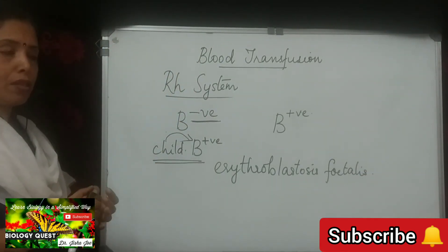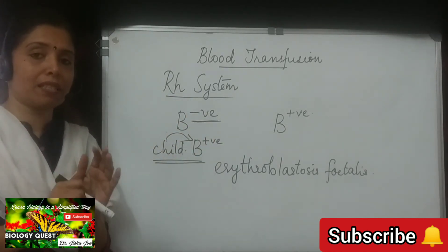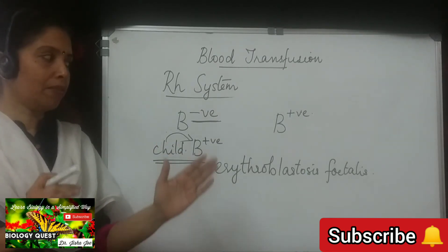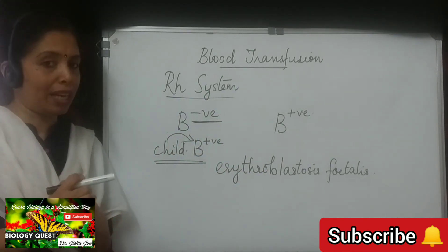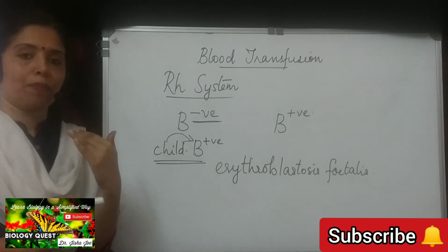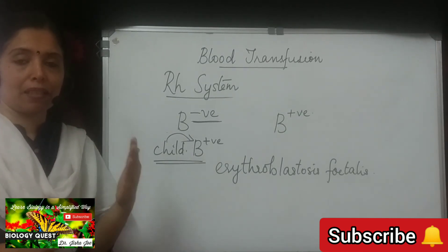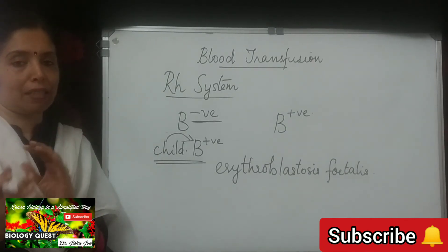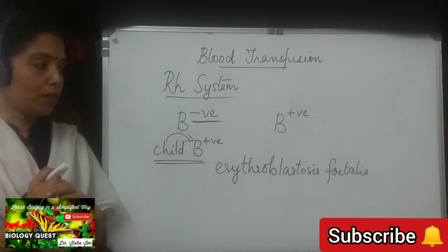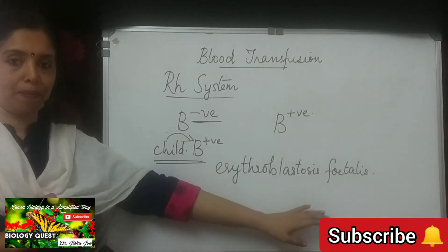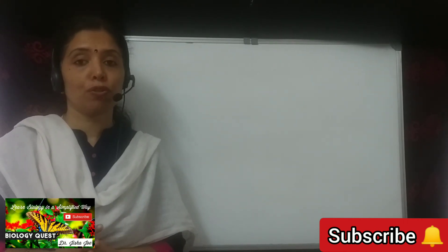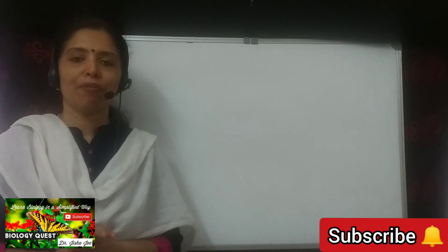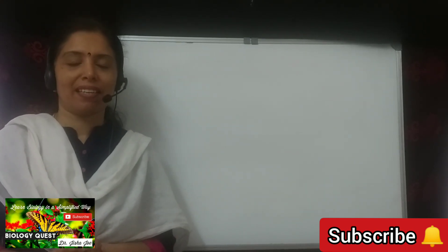So to summarize: the RH factor is not a problem during blood transfusions because compatibility is tested beforehand, but it becomes a problem during pregnancy when the mother is RH negative and the father is RH positive. In this session we have studied the two blood grouping systems — the ABO system and the RH system. If you have any doubts, please ask in the comment section. Thank you.